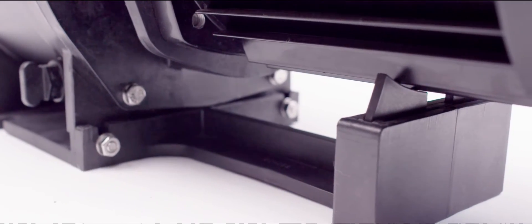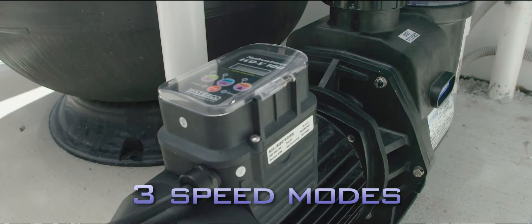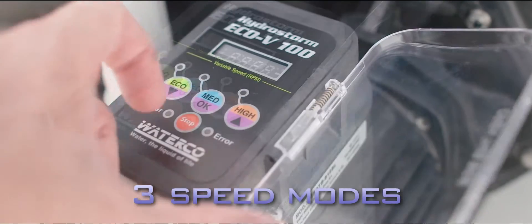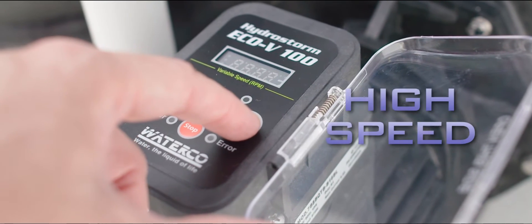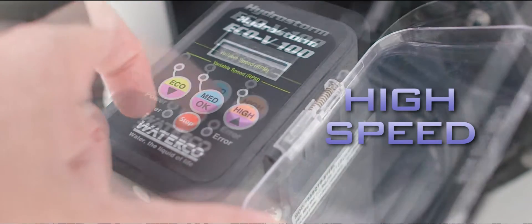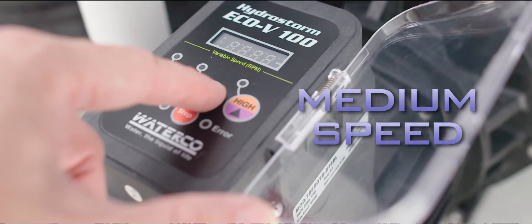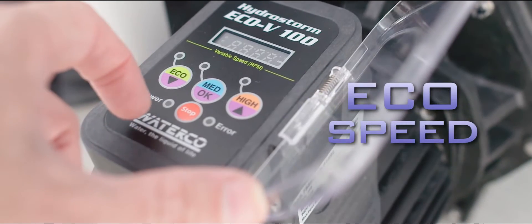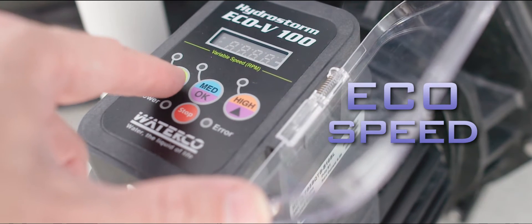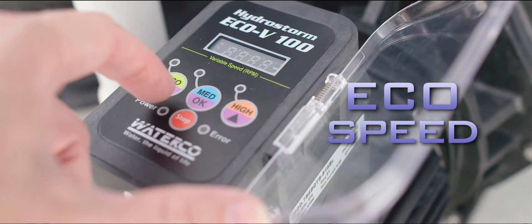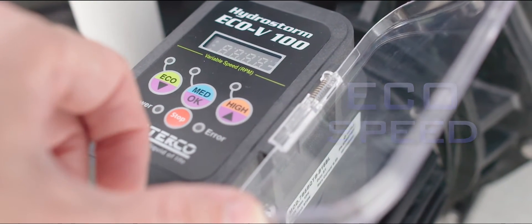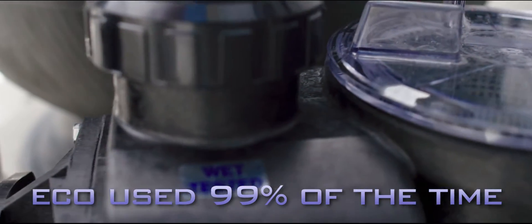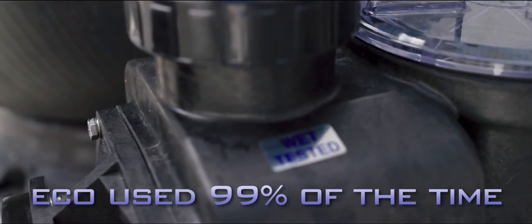The HydroStorm Eco-V can be set to 3 different pre-programmed speeds to achieve optimal performance. High speed gives the power needed for vacuuming and backwashing. Medium speed, perfect for suction pool cleaners. Eco speed, low energy saving speed for everyday filtration. This is the setting you will use 99% of the time.